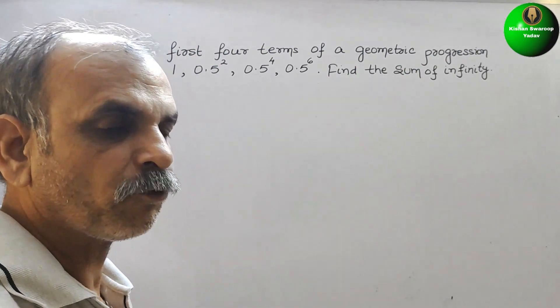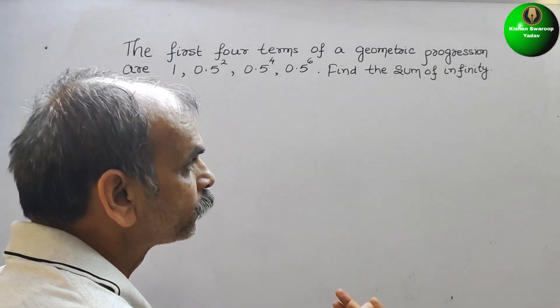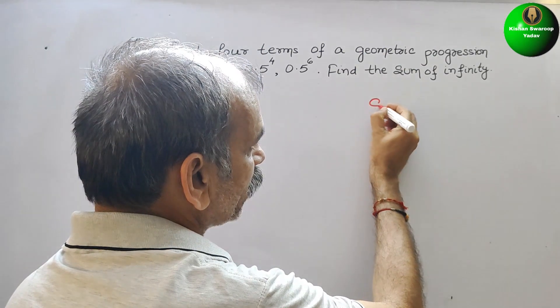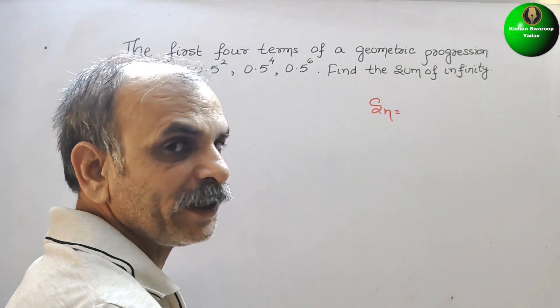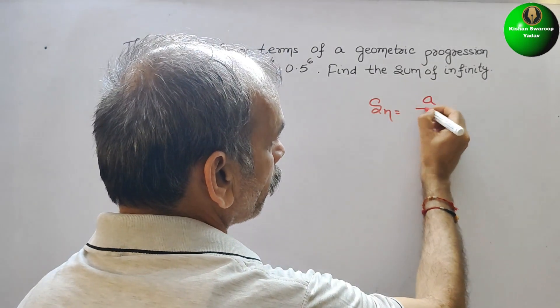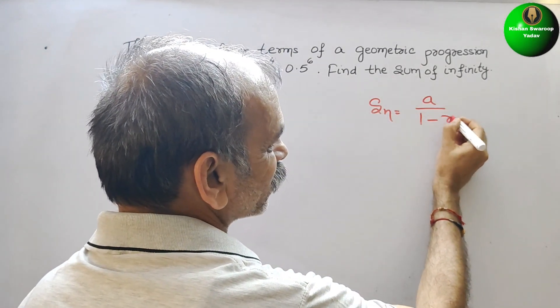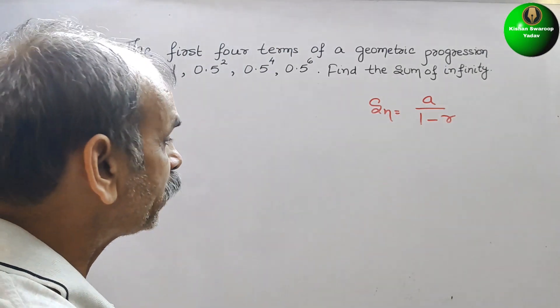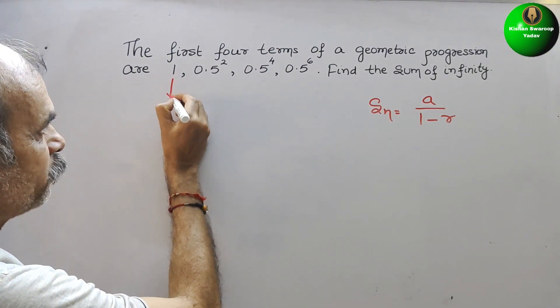First we will write the formula. What is that? S_n is equal to infinity, a by 1 minus r. Here if you see, this a is your first term.